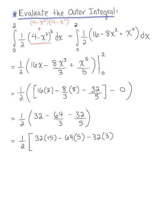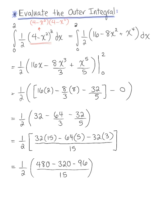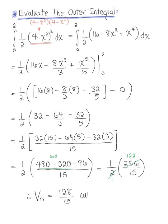Finding a common denominator of 15 within the parentheses, we have one half times the quantity 480 minus 320 minus 96, all over 15. That gives us 480 minus 320 equals 160, then 160 minus 96 equals 256, so we have one half times 256 over 15. Since 2 goes into 256 exactly 128 times, we arrive at the final answer: the volume of solid region D equals 128 fifteenths cubic units.